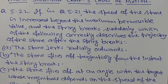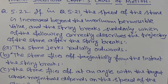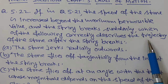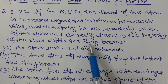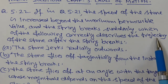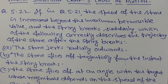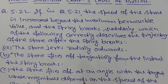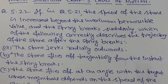The string suddenly breaks. We need to find the trajectory of the stone after the string breaks. In the first option, the stone moves radially outward — that is, it moves along the radius away from the center.